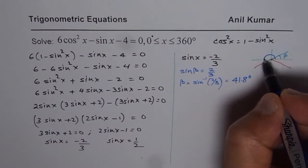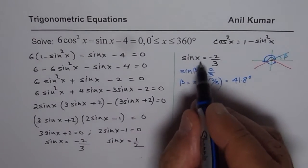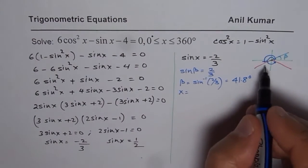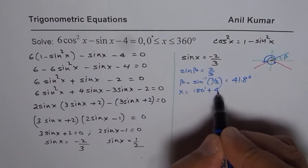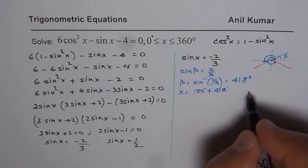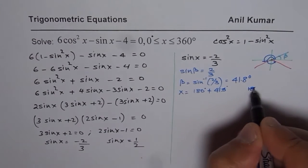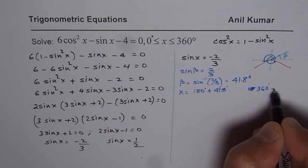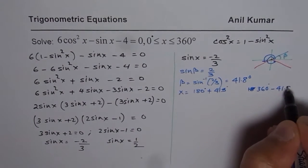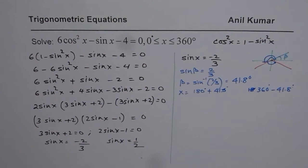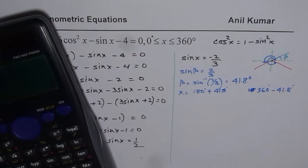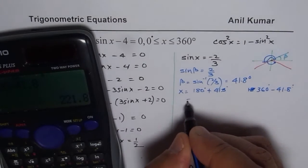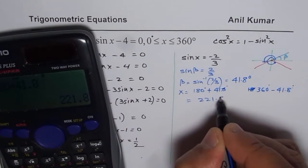So the angles will be how much? One angle for x will be equals to 180 plus 41.8. And the other will be 360 degrees minus 41.8 degrees. So these are the two solutions. So let us figure it out. We have 180 plus 41.8. That is 221.8 degrees.